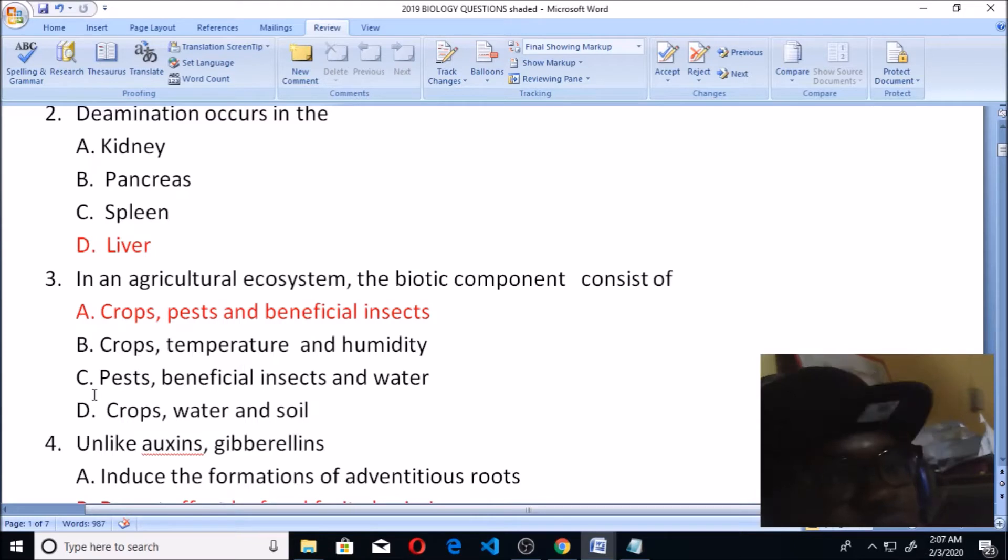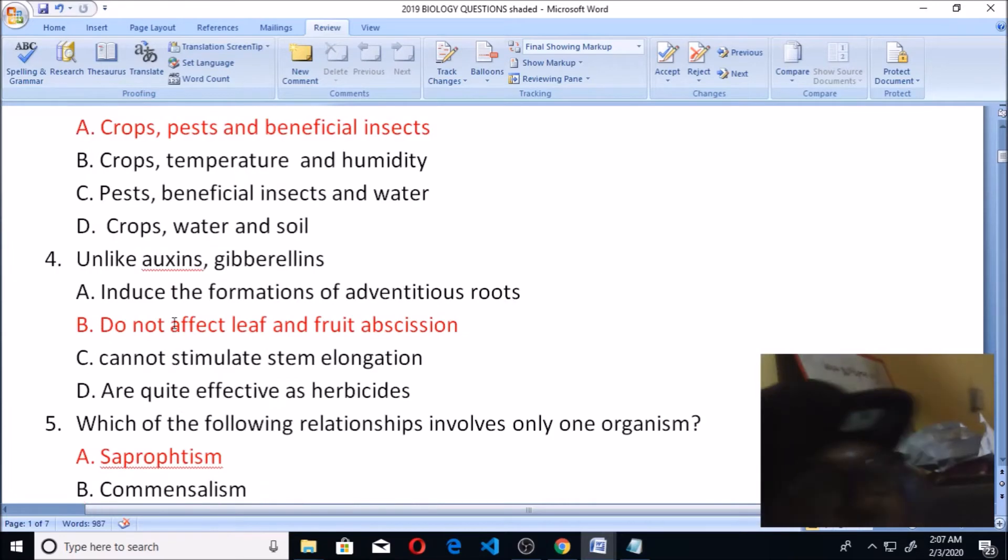In the third option you have pests, beneficial insects and water - water is not a living thing. Insects and pests are living things. In the fourth option we have crops, water and soil - water and soil are not living things. So the right option here is A. Now let's look at number four: unlike auxins, gibberellins do what.